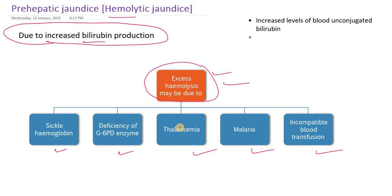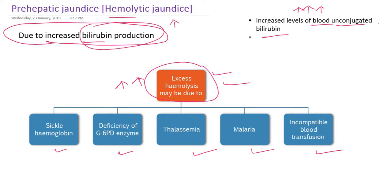80% of the bilirubin produced in our body comes from the rupture or death of RBCs, where heme is converted to bilirubin. An important point in prehepatic jaundice is that there is increased unconjugated bilirubin. The bilirubin formed from RBCs is unconjugated bilirubin, which is conjugated in the liver. Because of excess hemolysis, there is increased production of bilirubin, leading to increased levels of unconjugated bilirubin in the blood.